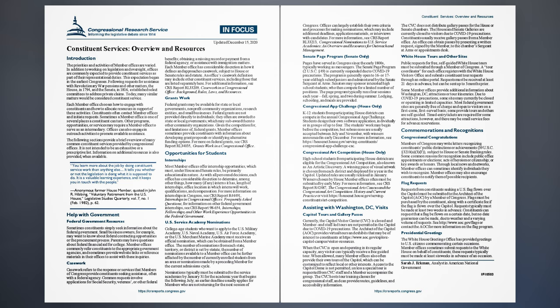White House Tours and Other Sites. Public requests for free, self-guided White House tours must be submitted through a member of Congress. A tour coordinator for each office registers with the White House Visitor's Office and submits constituent tour requests through an online portal. Requests must be received at least 21 days in advance but can be sent up to three months prior. Some member offices provide additional information about Washington, D.C. attractions or tour itineraries. Due to COVID-19 precautions, some sites may currently be closed or operating in limited capacities. Most federal government sites are generally free of charge and open to visitors on a first-come, first-served basis; some provide tours and others are self-guided. Timed entry tickets are required for some attractions, and there may be small service fees for advance reservations.